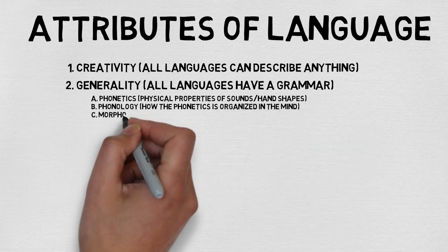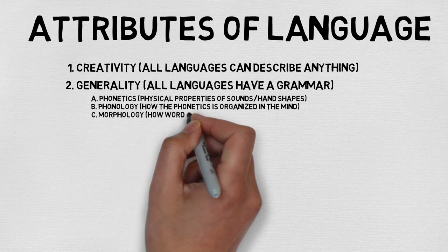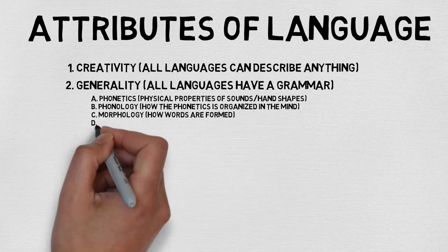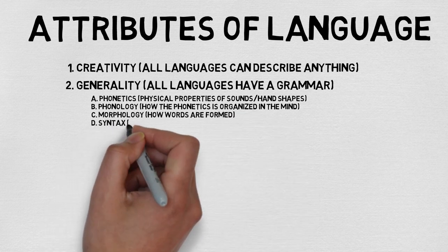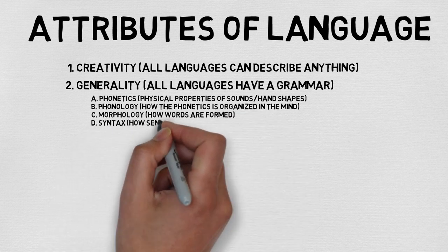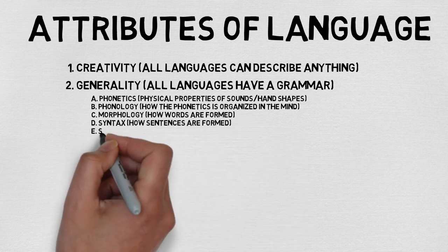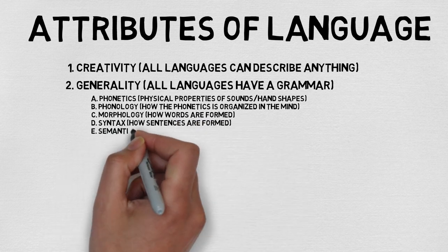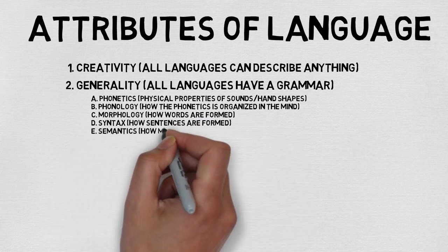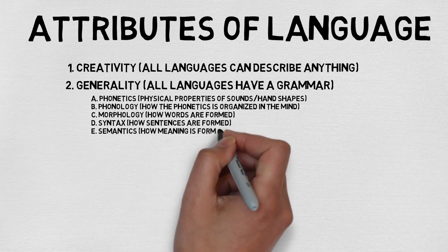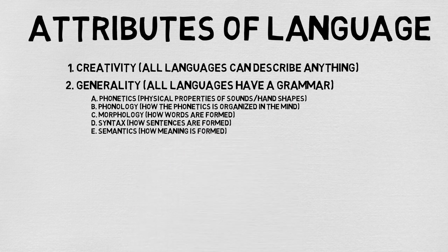This is different than what most people mean when they talk about grammar. We are not talking about things like when to use a comma, when to capitalize, or when to use who versus whom. Instead, a language's grammar is made up of the following components.